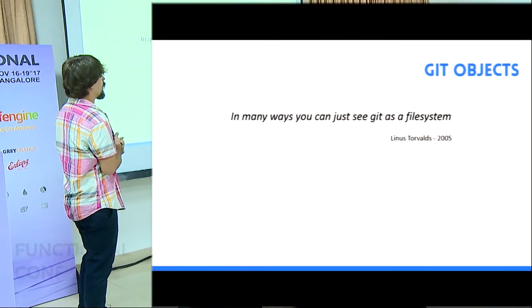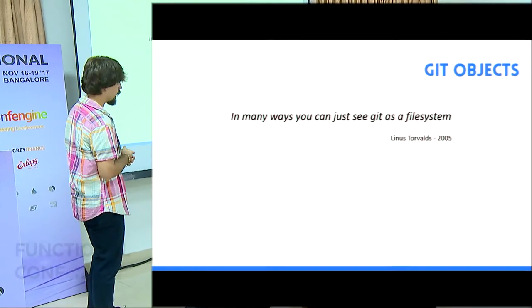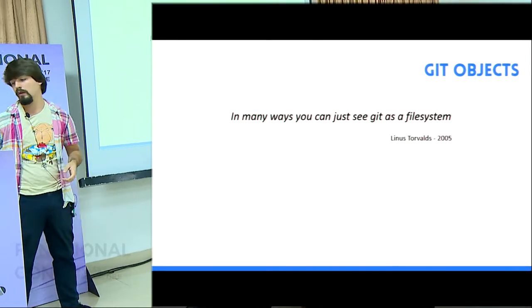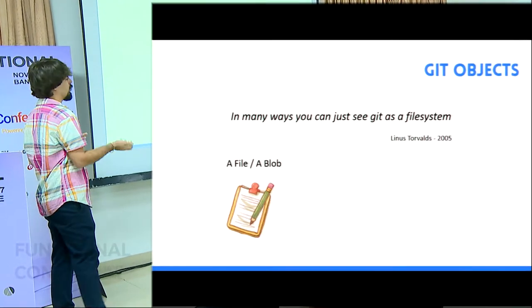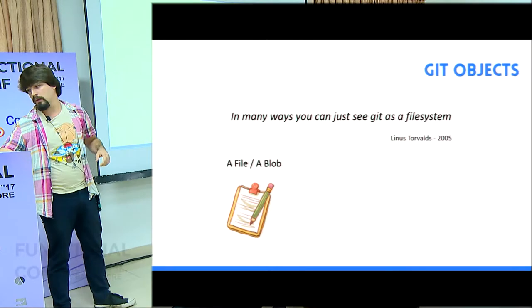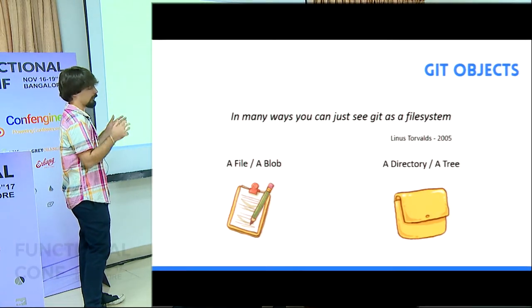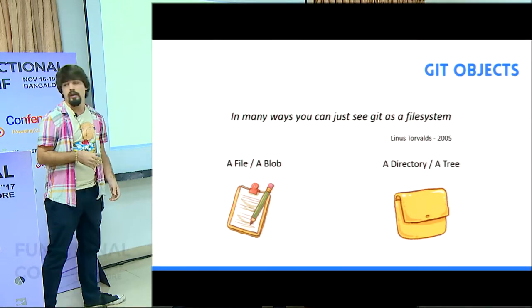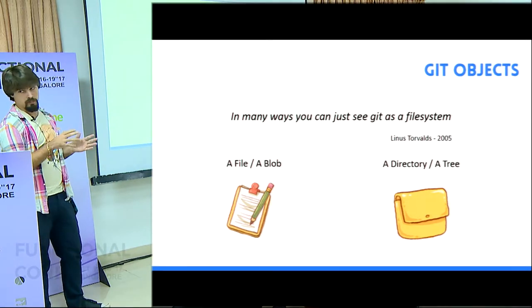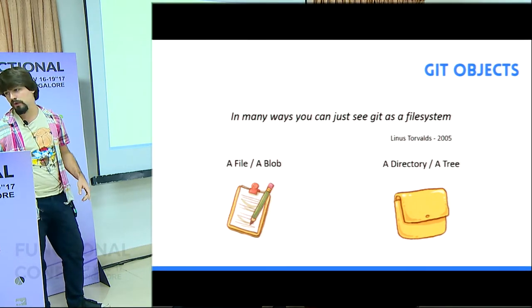What is Git? As Linus said, Git is like a file system. Like a file system, you can find some files, but the name of the file in Git is a blob, and some directory, and the name in Git is a tree. So all of this is your file system, and we explain each object of Git.